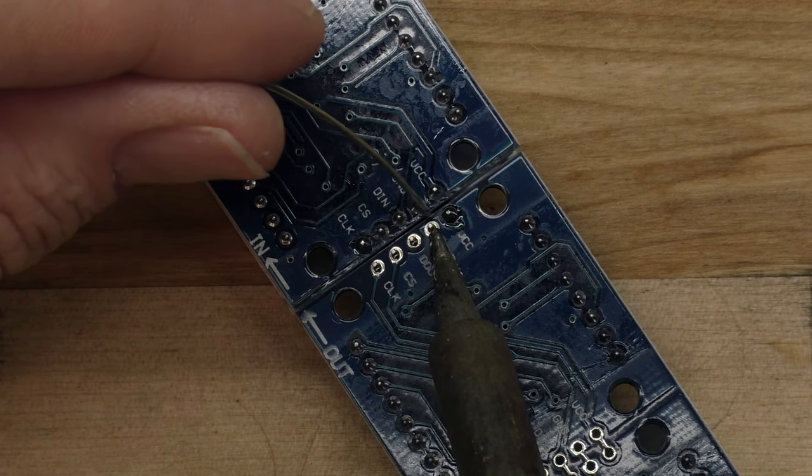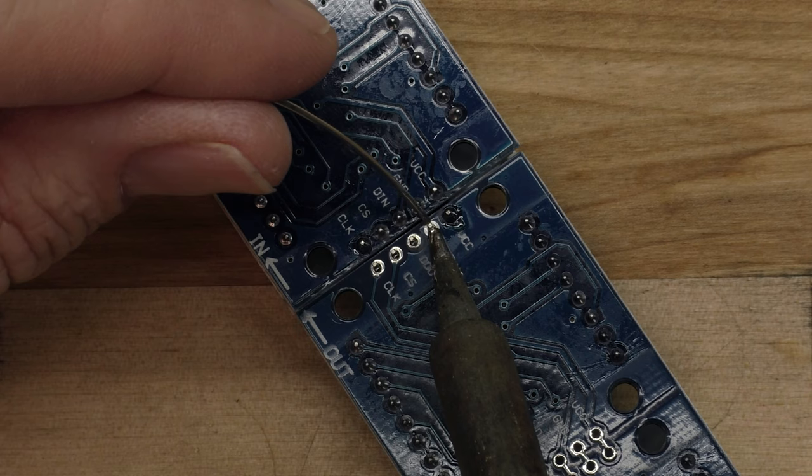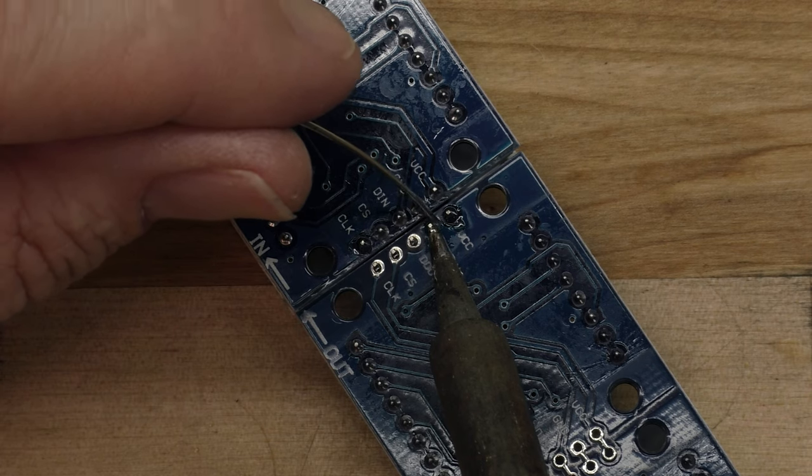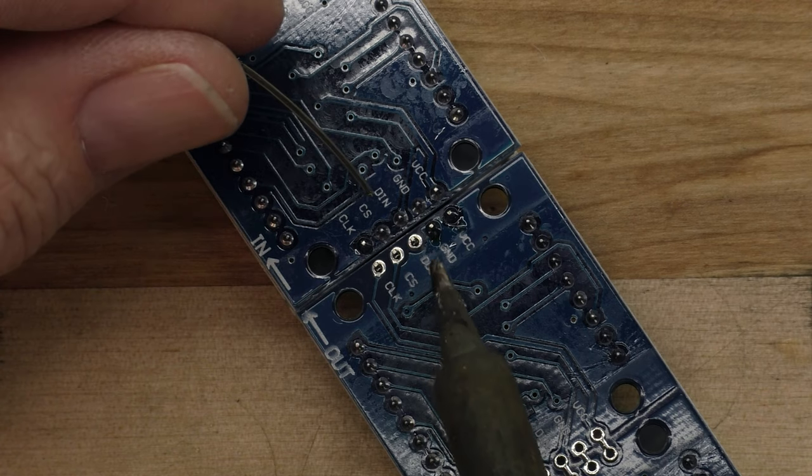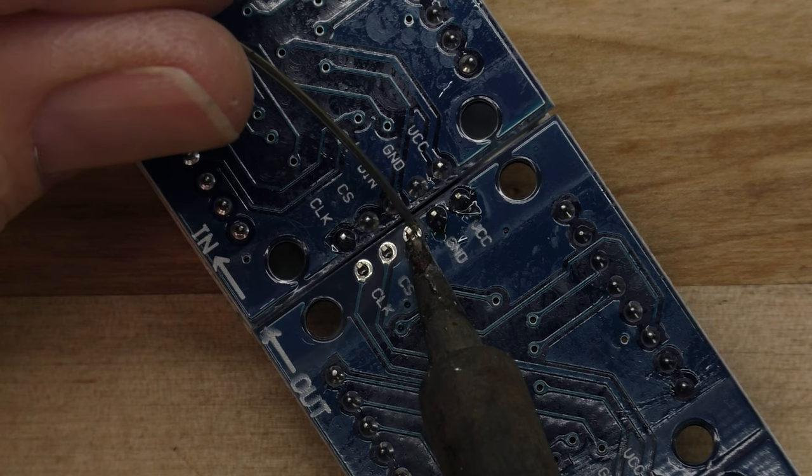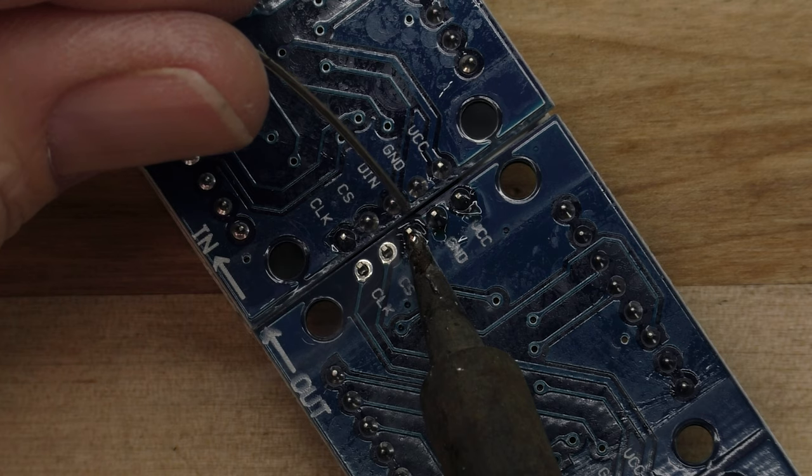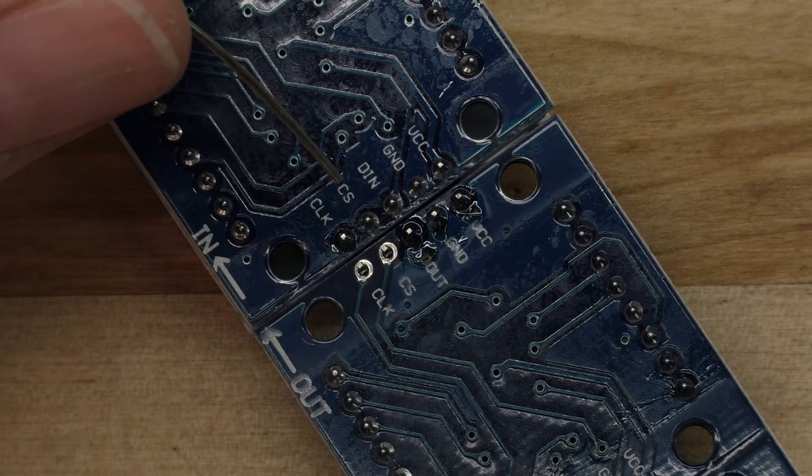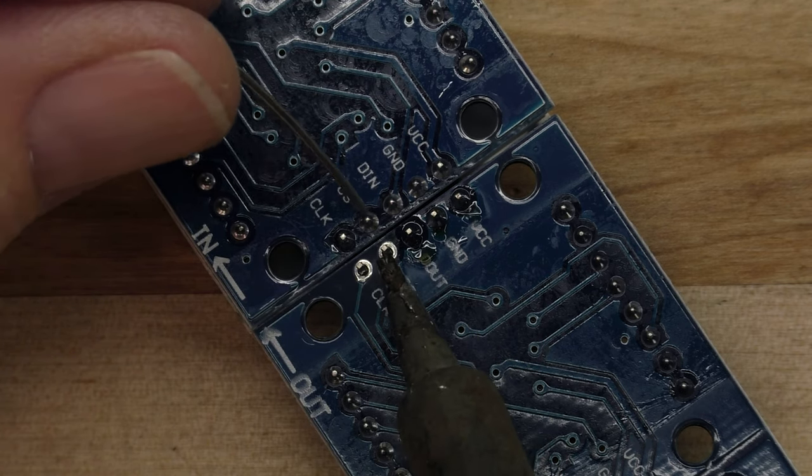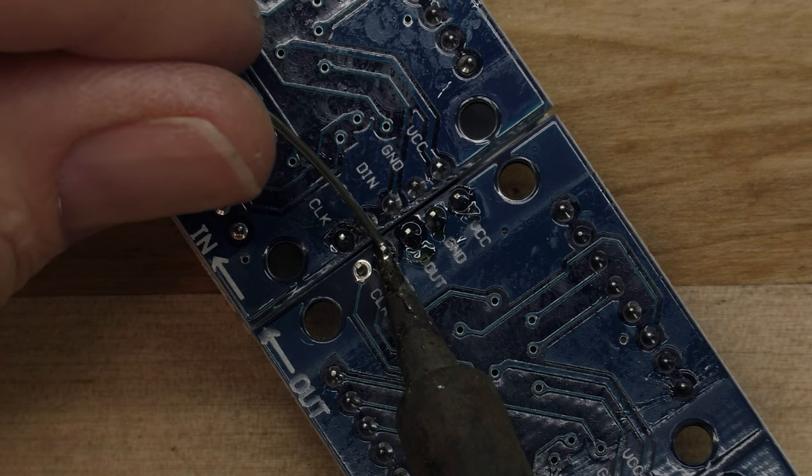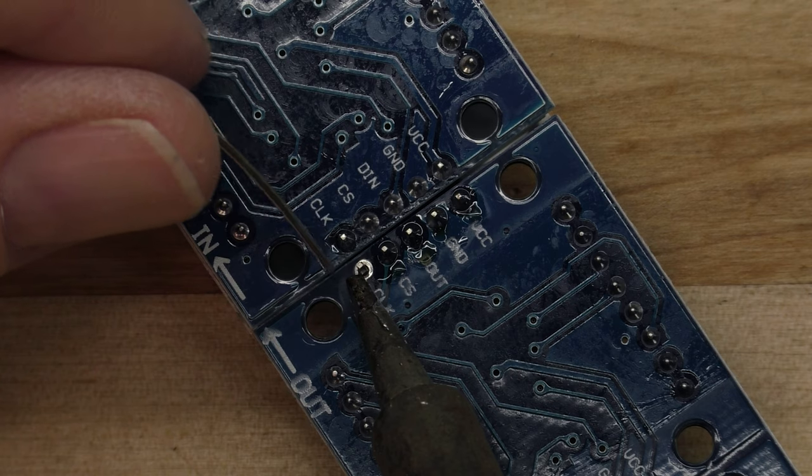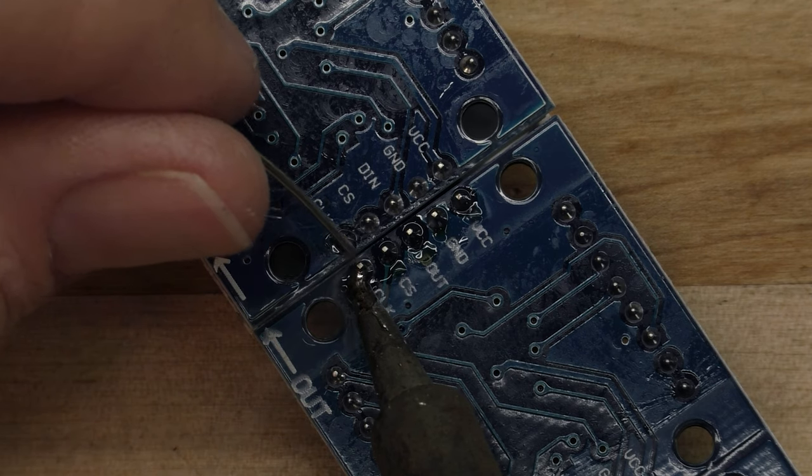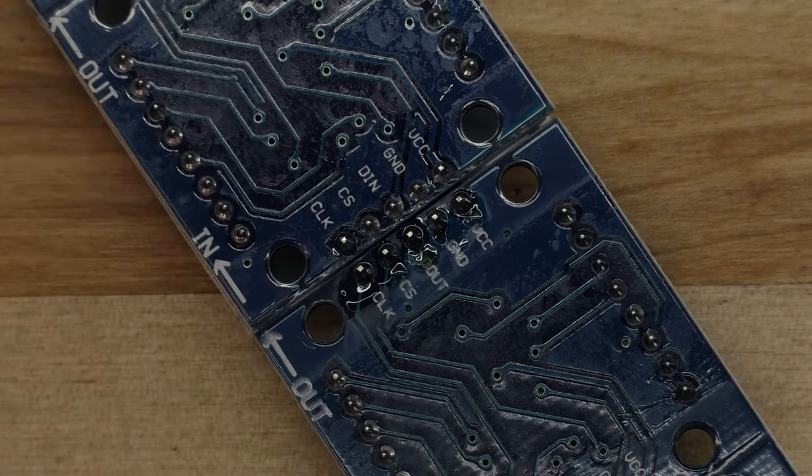Soldering iron on, then bring in the solder. Leave the soldering iron on for a second and then pull it away. And that's a good, clean solder joint. Soldering iron, solder, pull away soldering iron. Soldering iron, solder, pull away the soldering iron. And our last one. Five perfect little solder joints.